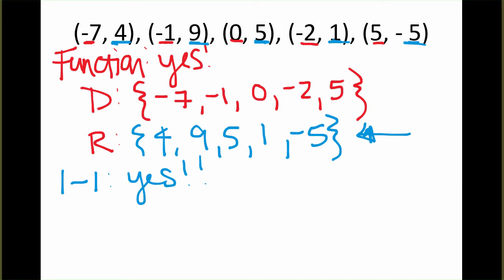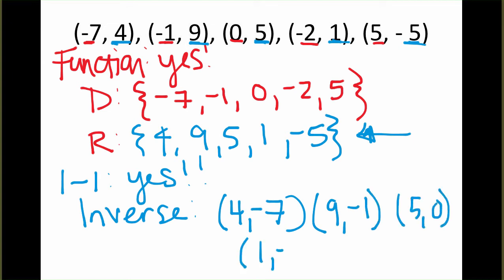In this case, the inverse, if you think back to the definition we talked about on the previous page, is the complete opposite. Our inverse is going to just reverse all of these points. It will contain the point (4, -7). We're just flipping the x and the y values, not changing the signs at all. It will also include the points (9, -1), (5, 0), (1, -2), and (-5, 5).